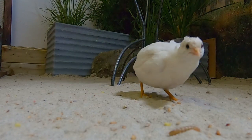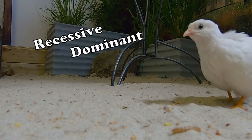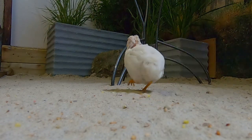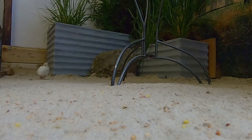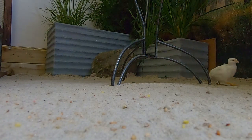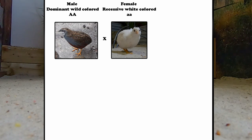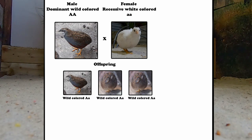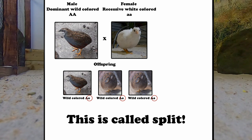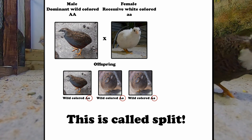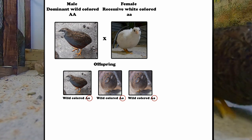It's important to know that these colors can be recessive or dominant. When a color is dominant, only one parent has to pass on that particular color gene and it's always shown, no matter what the other parent passes on. For example, a male with dominant wild color and a female with recessive white color — all offspring will have the wild color. If the other parent passes on a recessive color like white, the offspring won't visually show it, but will carry it, making it possible to pass this recessive color on to future generations.